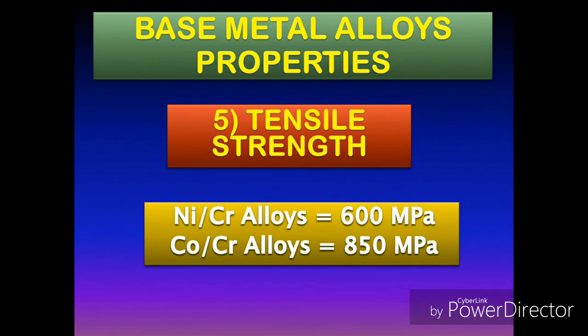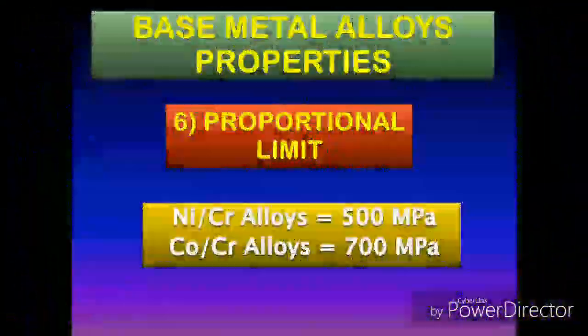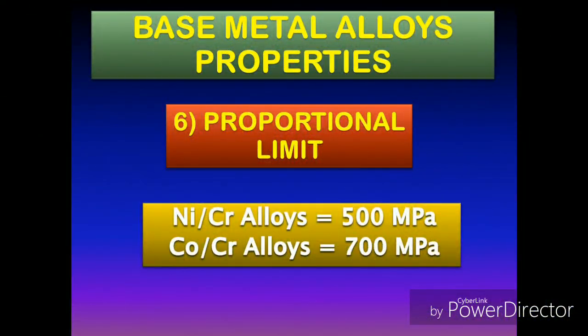The tensile strength of nickel-chromium casting alloy is 600 megapascals, whereas the tensile strength of cobalt-chromium alloy is 850 megapascals, so cobalt-chromium has more tensile strength. Comparing the proportional limit, the values for nickel-chromium and cobalt-chromium are 500 and 700 megapascals respectively, and the higher values suggest that both alloys have the ability to withstand stresses without deformation.